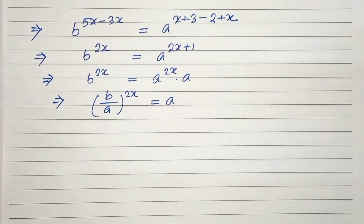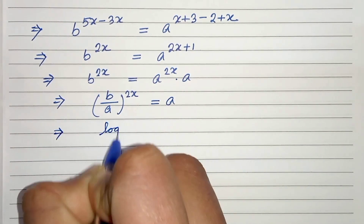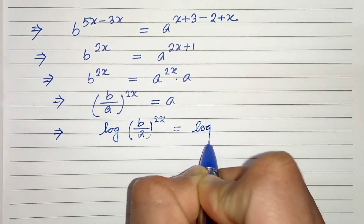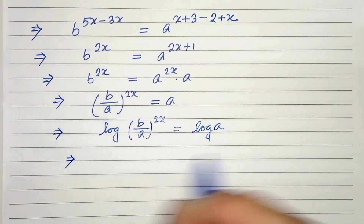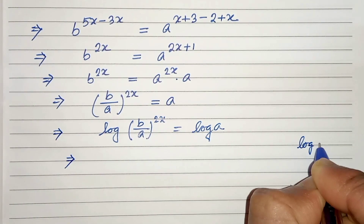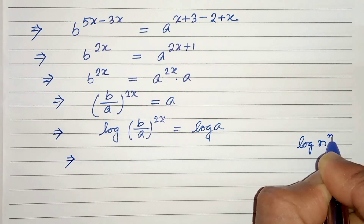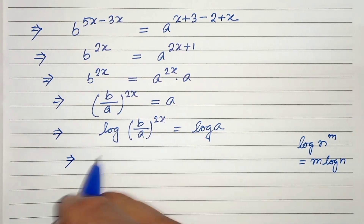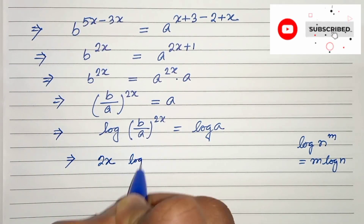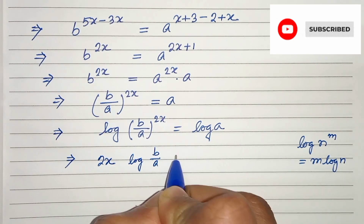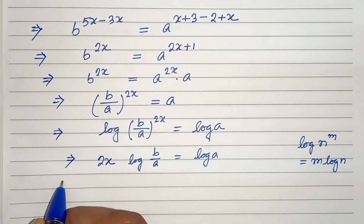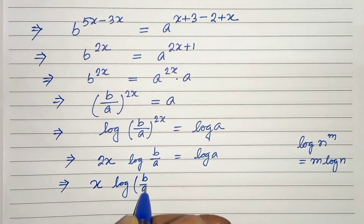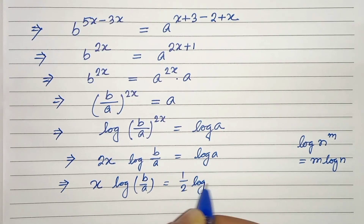In the next step we will take log both sides. So log of b by a, whole to the power 2x, equals log of a. And we know that log of n to the power m can be written as m log of n. So from here we can write 2x log of b by a equals log of a. In the next step let's divide by 2. So x log of b by a equals half log of a.